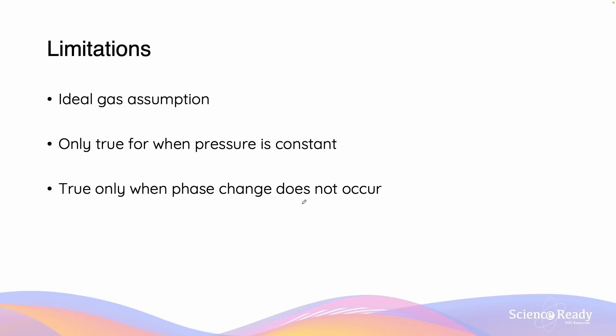Limitations of Charles's law includes that it has a reliance on the ideal gas assumptions, which assume that at extreme temperatures, there are no changes in phase or properties of gas. And therefore, in order for it to be true, Charles's law relies on the fact that phase change does not occur at extreme temperatures.